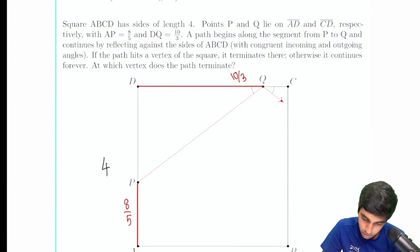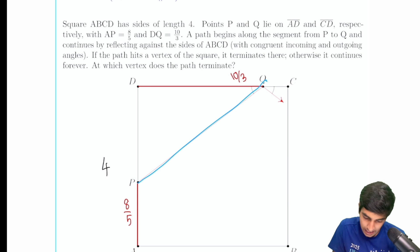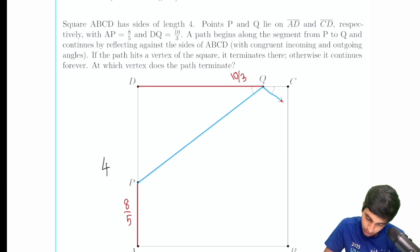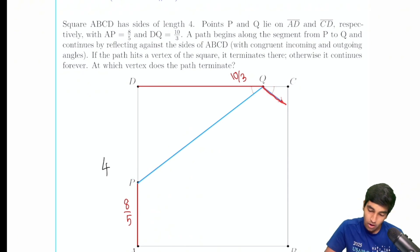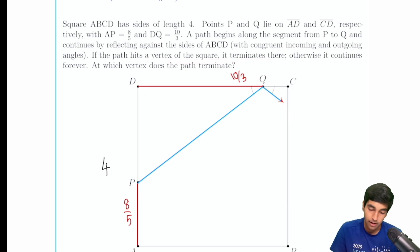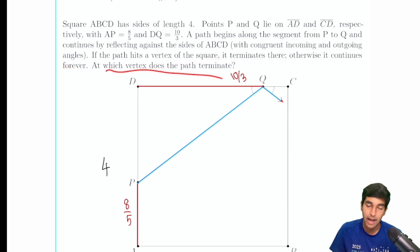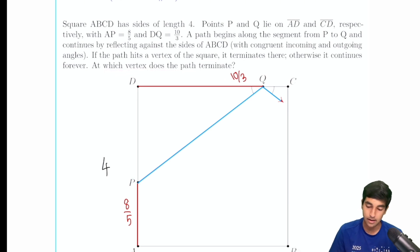Let's draw our path in blue — P to Q. It's going to reflect by the law of reflection, which says this angle equals this angle. If it hits a vertex, it terminates there; otherwise it continues forever. At which vertex does the path terminate, or does it never terminate?